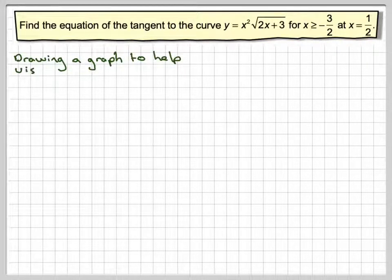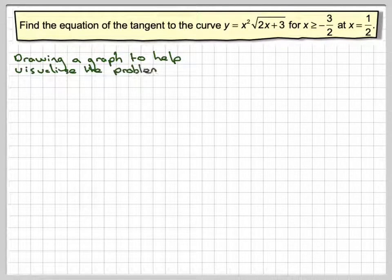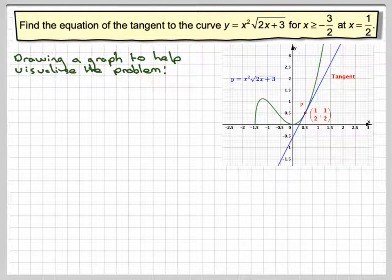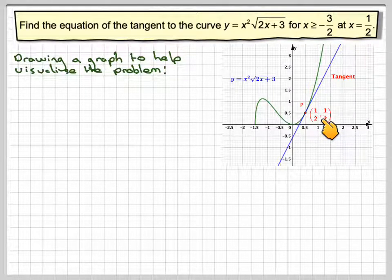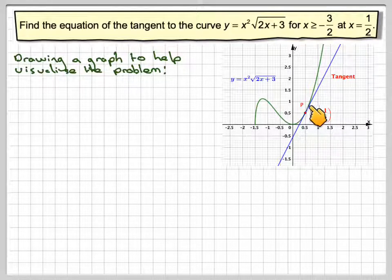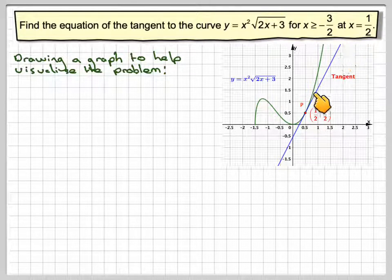Drawing a graph to help visualize the problem, I used GeoGebra for this graph. Here we have our function, here we have x equals a half. We're going to find that y equals a half later, and this is the equation of the line that I've got to find, which is the tangent.